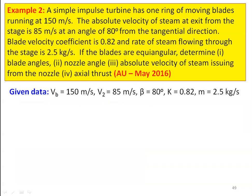The next question is from the May 2016 question paper. A simple impulse turbine has one ring of moving blades running at 150 meters per second. The absolute velocity of the steam at the exit from the stage is 85 meters per second at an angle of 80 degrees from the tangential direction. Blade velocity coefficient is 0.82 and the rate of steam flowing through the stage is 2.5 kilograms per second. If the blades are equiangular, determine: blade angles, nozzle angle, absolute velocity of steam issuing from the nozzle, and axial thrust.